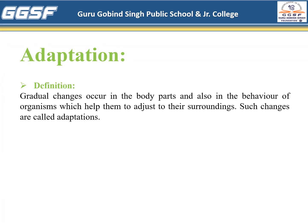Now, all these get counted under the living world. That is what we are going to learn in this chapter — how living organisms live and how they adapt to a particular condition, which is called adaptation. The definition of adaptation is: a gradual change that occurs in the body parts and also in the behavior of organisms, which helps them to adjust to their surroundings. Such changes are called adaptation.